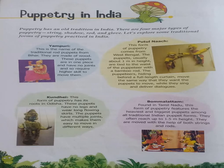The next is Kundhi. This form of puppetry has its roots in Odisha. These puppets have no legs and they wear flowing clothes so that the legs are not visible. They have multiple joints, which allows them to be moved easily in any direction.